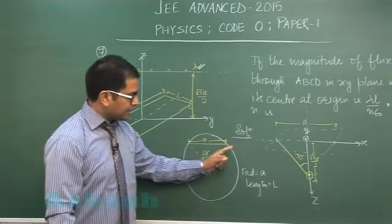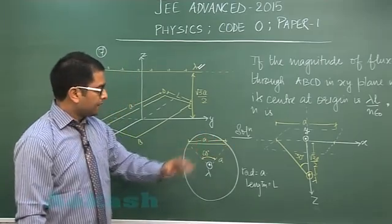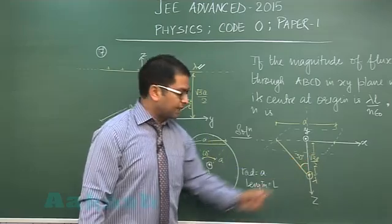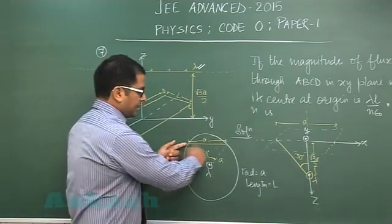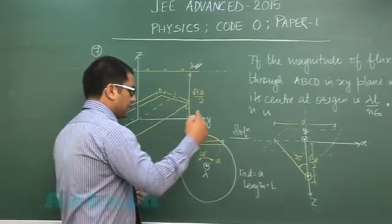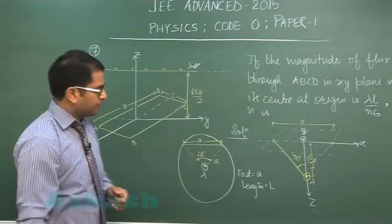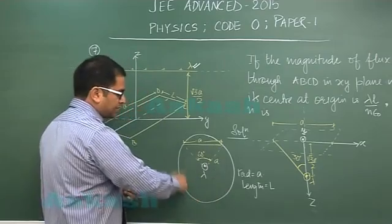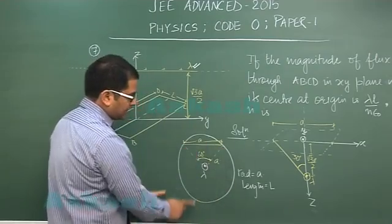The infinitely long line charge is kept along the axis. The cylinder has radius a and length l, and the plane which has been axed, through which the flux is to be calculated, lies here. The length is a on this side, and here would be l by 2, and within would be l by 2. Now you could see such 6 planes could be constructed within the cylinder.